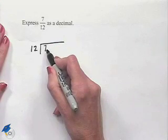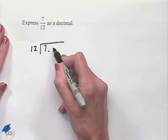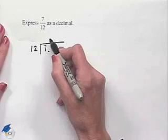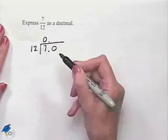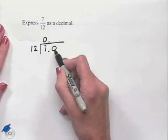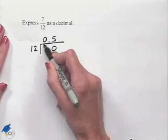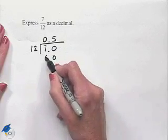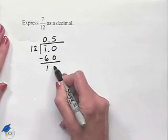Now, 12 does not go into 7, so we're going to have to add a decimal point and put a 0. In our quotient, we'll indicate that as follows. 12 goes into 70 five times. 5 times 12 is 60. Subtracting, we come up with a 10.